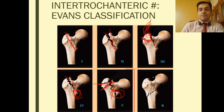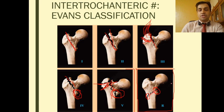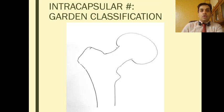Till some years ago, Evans classification ended at Type 5. But a new classification has been added: Evans Type R refers to a reverse oblique fracture with the fracture line traveling from the superomedial aspect to the inferolateral aspect — in the reverse direction.